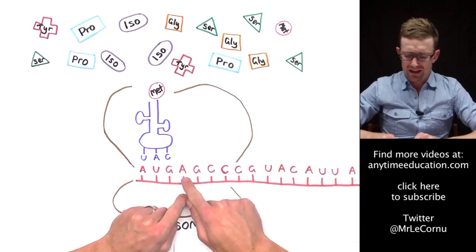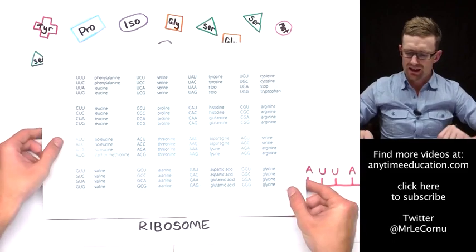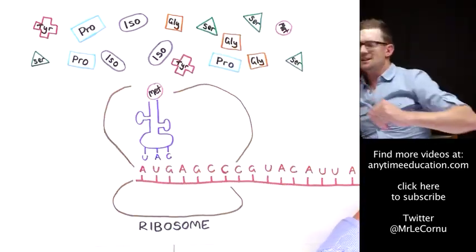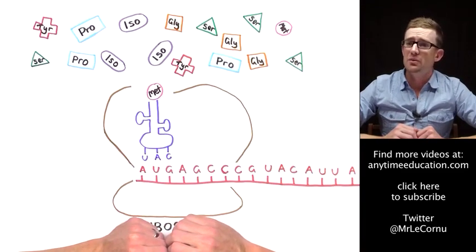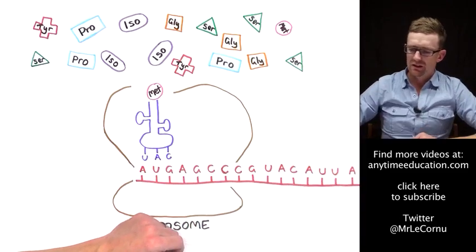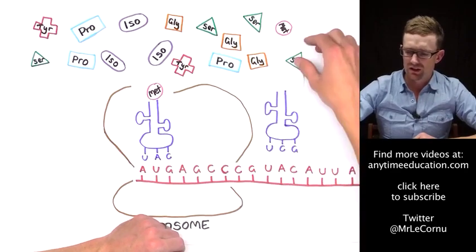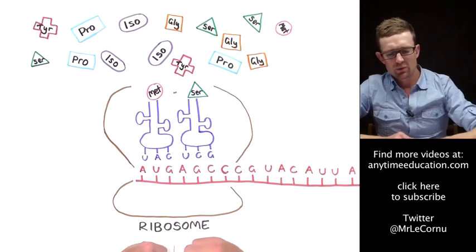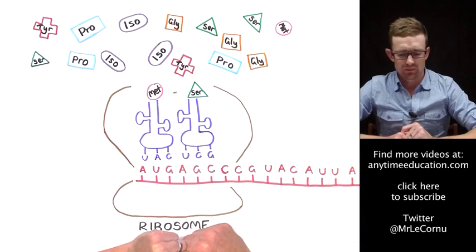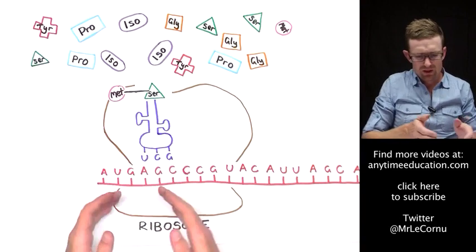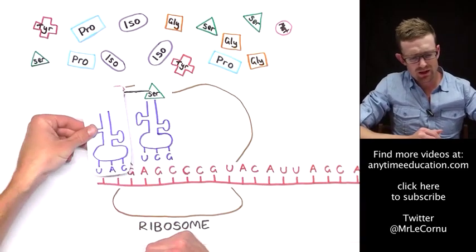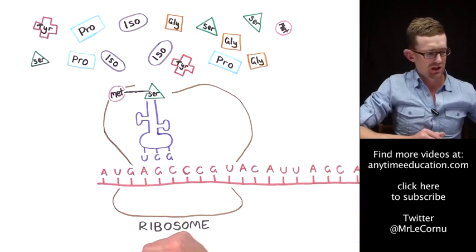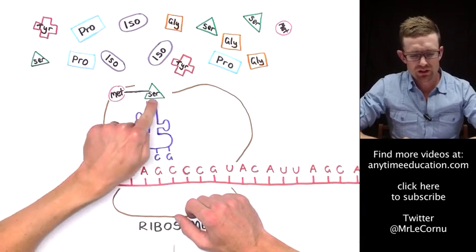Next we have a codon of AGC. Consulting our genetic code, AGC codes for the amino acid serine. The anticodon on the tRNA molecule will be UCG. That transfer RNA collects a serine amino acid and transfers it to the ribosome so it can bind with the first amino acid and start our polypeptide chain. Everything then moves along one position. The transfer RNA that dropped off methionine detaches and moves away, free to collect another methionine. A bond has now formed between the first and second amino acids.